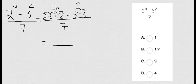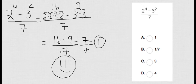Finally, I have 16 minus 9 over 7. 16 minus 9 is 7, and 7 over 7 is just 1. And that's it.